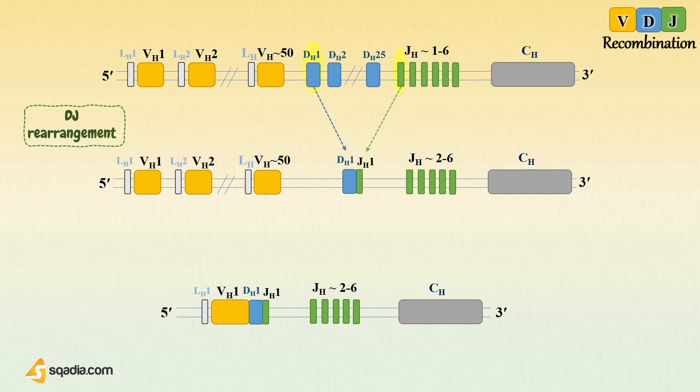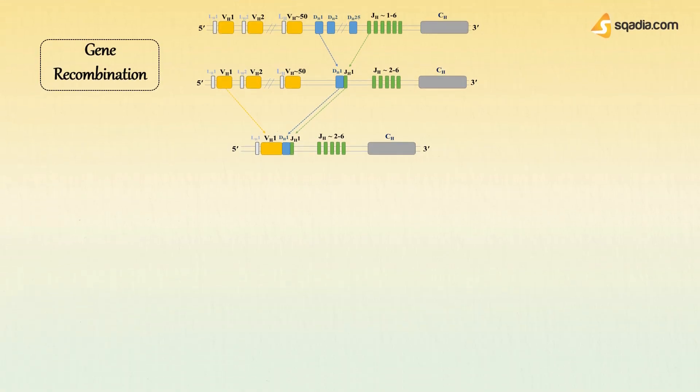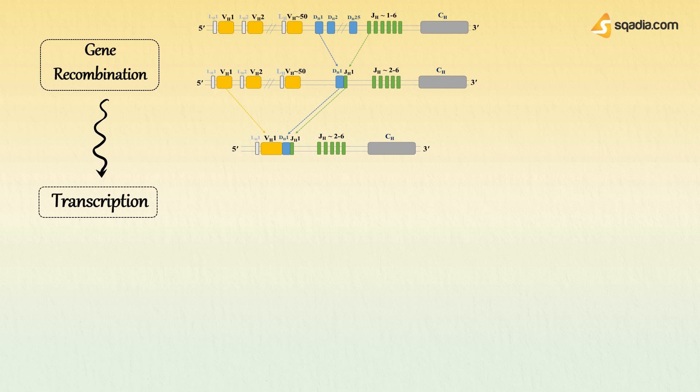Now the second rearrangement takes place, where V segment recombines with the already combined DJ segment. This is called VDJ rearrangement. In this example, V1 segment is combined with D1 J1 segment with the loss of the intervening DNA in the form of a loop. Now this creates a complete V region exon, and here rearrangement completes.